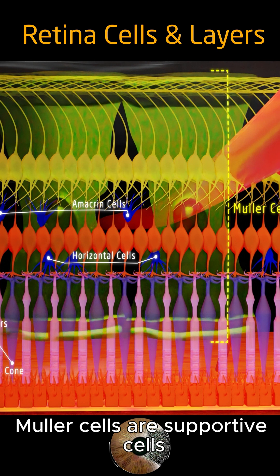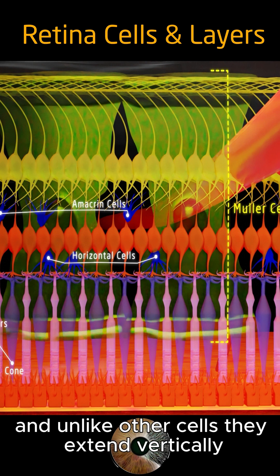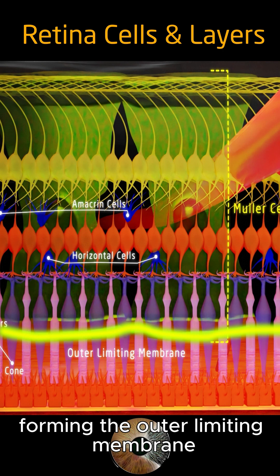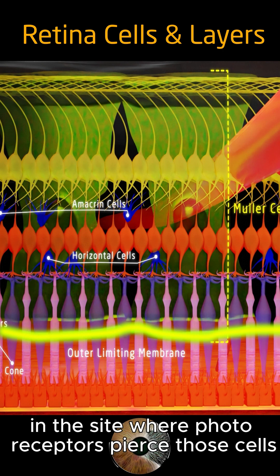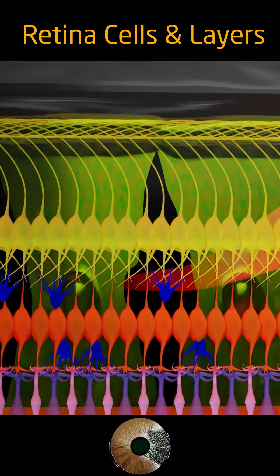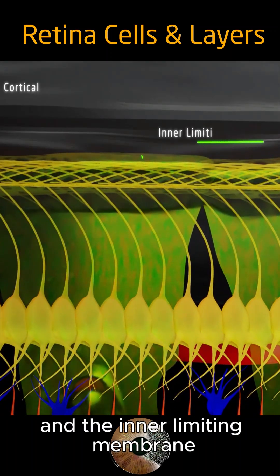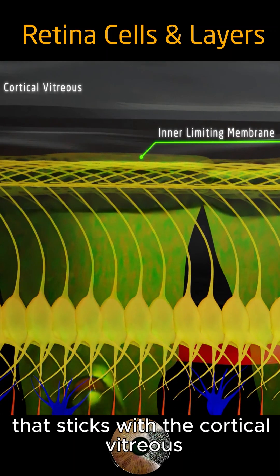Muller cells are supportive cells, and unlike other cells, they extend vertically forming the outer limiting membrane in the site where photoreceptors pierce those cells, and the inner limiting membrane that sticks with the cortical vitreous.